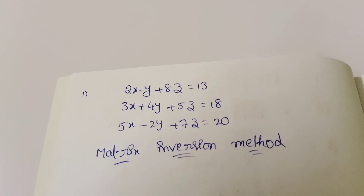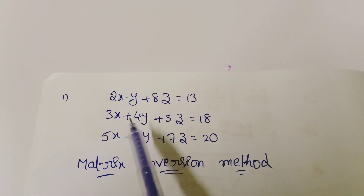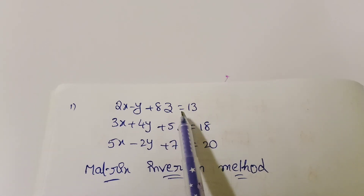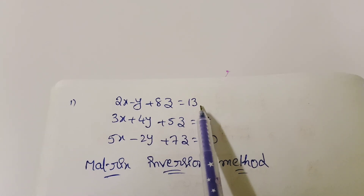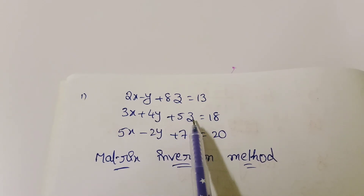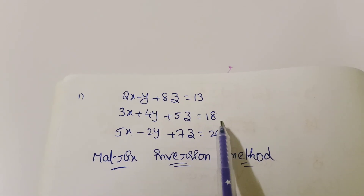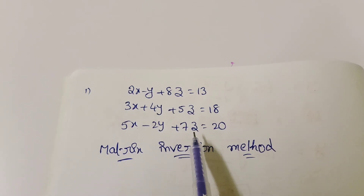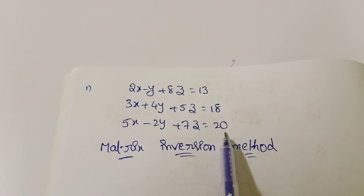Now come to the point. Here is the given equation: 2x minus y plus 8z equal to 13; 3x plus 4y plus 5z equal to 18; 5x minus 2y plus 7z equal to 20.